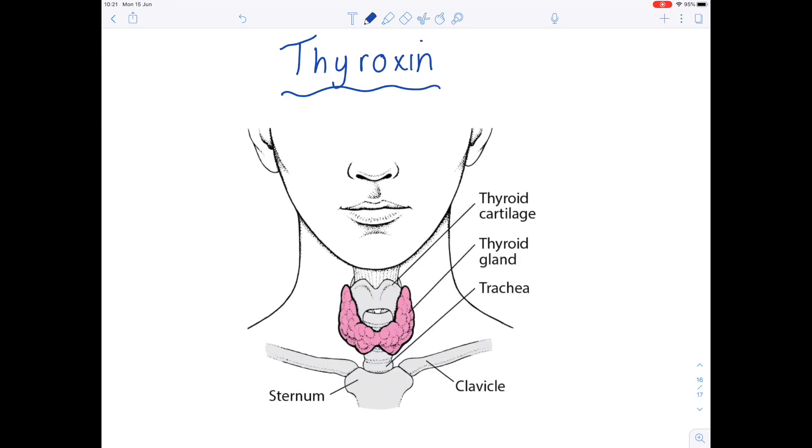I've added a diagram so you can see where thyroxine is made. It is made inside the thyroid gland which is found in the base of the neck. You can see the windpipe, the trachea underneath. Thyroxine is made in the thyroid gland.